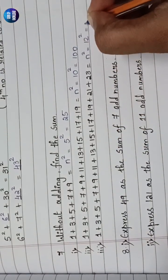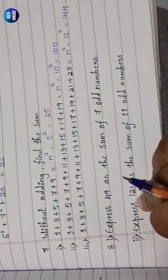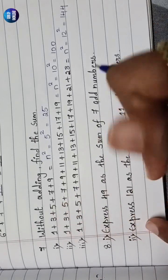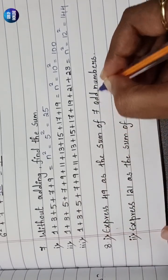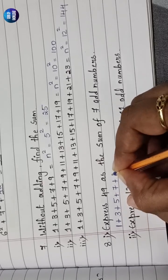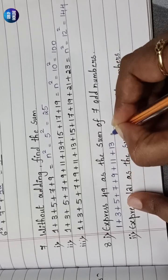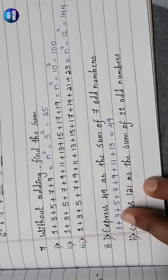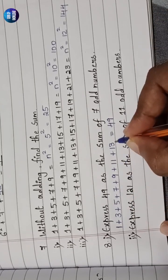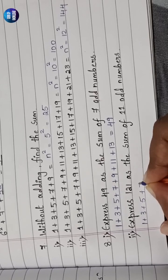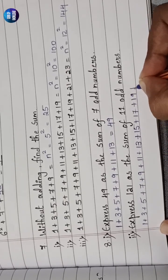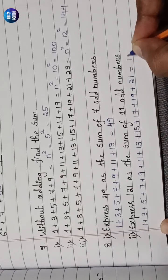Next, express 49 as the sum of 7 odd numbers: 1+3+5+7+9+11+13 = 49. Then express 121 as the sum of 11 odd numbers: 1+3+5+7+9+11+13+15+17+19+21 = 121.